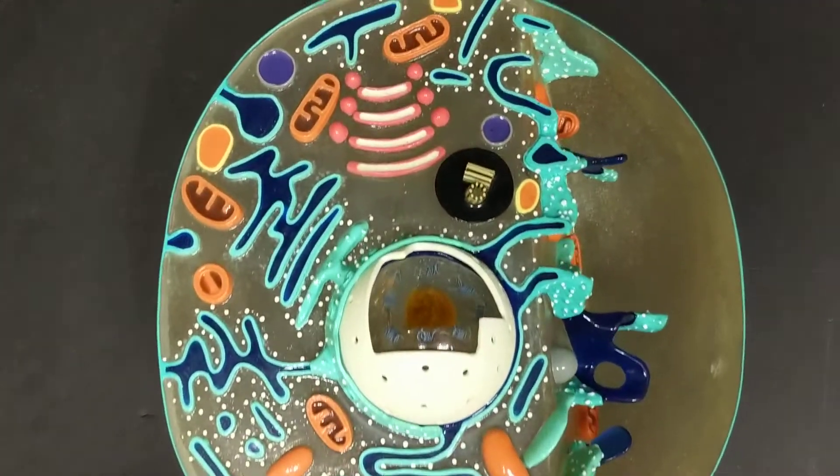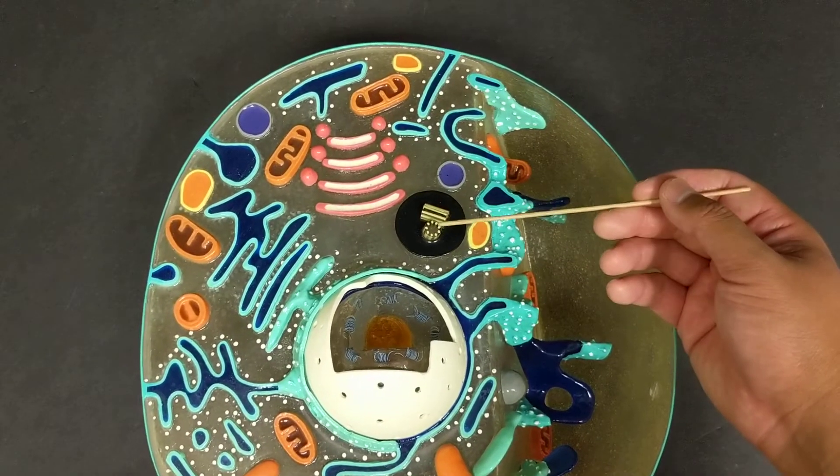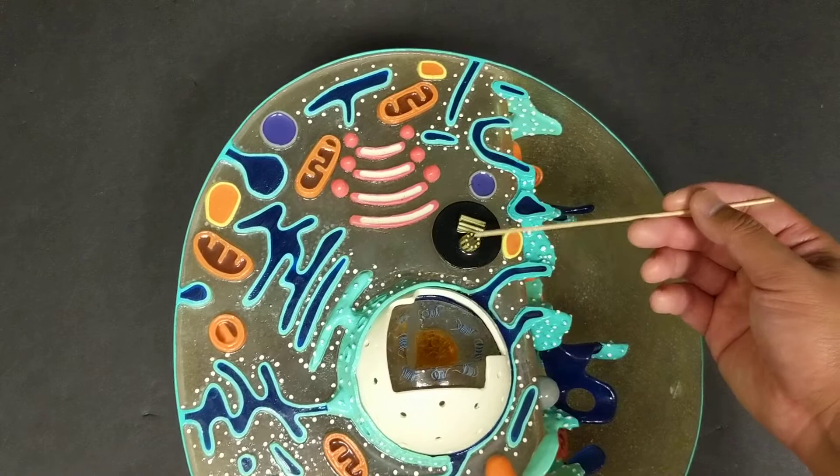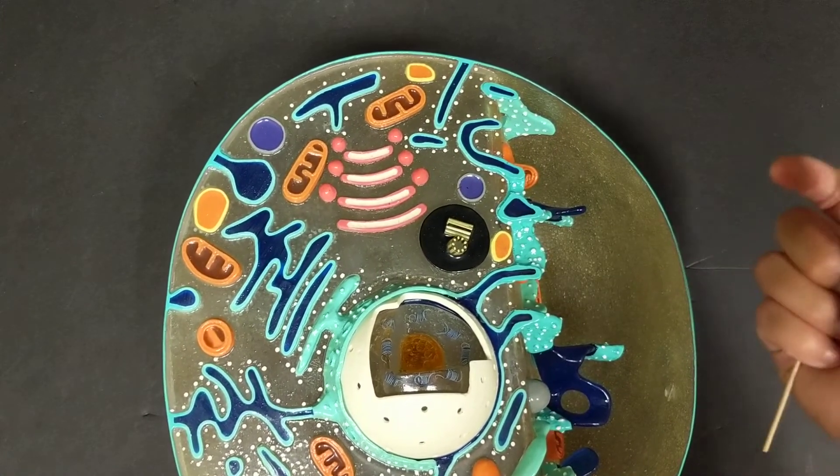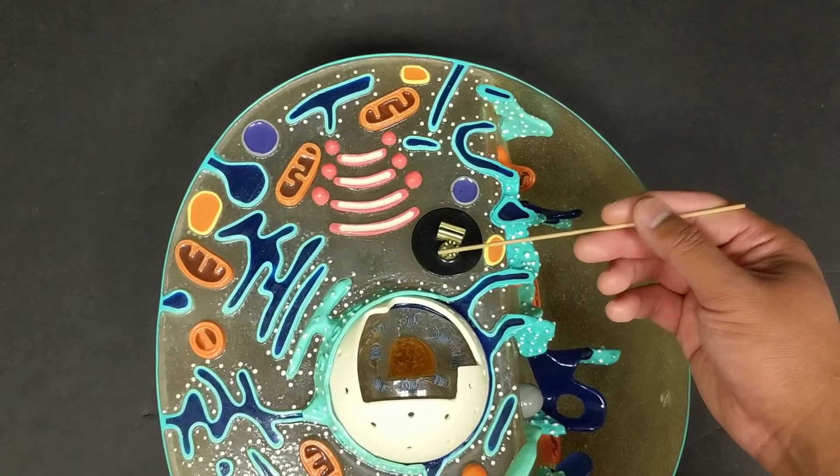Now I think the last one that we have is the centrioles again. Here we have the centrioles. Although it's not quite as churro-like, you can definitely see that it is in a pair. There are these tubes going through it. They are going to be relatively short and they're kind of cylindrical and rod-like. This is the centrioles, which I remember as the mini churros.